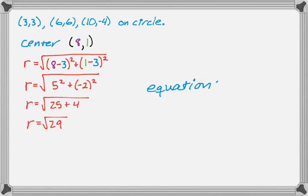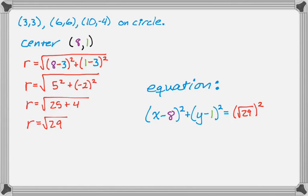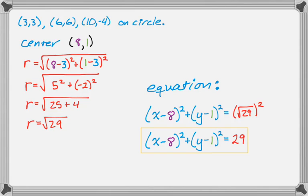Now that I know the radius, I can write the equation of the circle. The equation is the quantity x minus 8 squared plus the quantity y minus 1 squared equals the quantity radical 29 squared, which simplifies to x minus 8 squared plus y minus 1 squared equals 29. That's the equation of the circle. I hope you found this helpful — good luck.